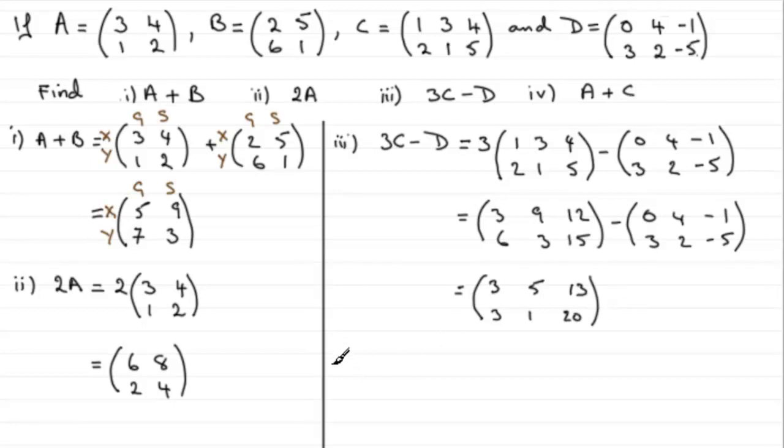Now for the last one, part four, we've got to work out what A + C is. A is the matrix (3 4; 1 2) and C is the matrix (1 3 4; 2 1 5). Now with something like this, we can't do it. We can't do it because the dimension of this matrix, 2x2, is different from the dimension of this matrix, 2x3.